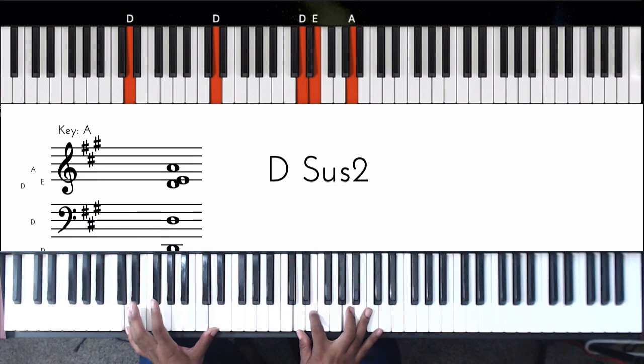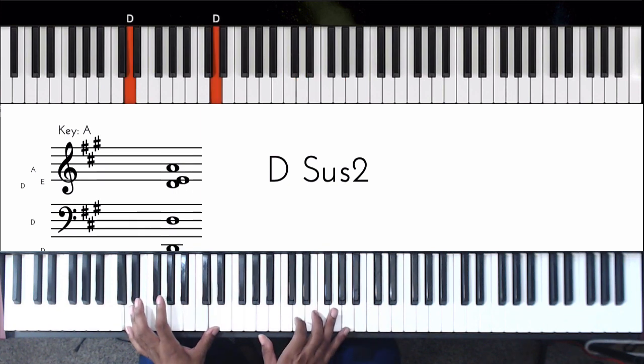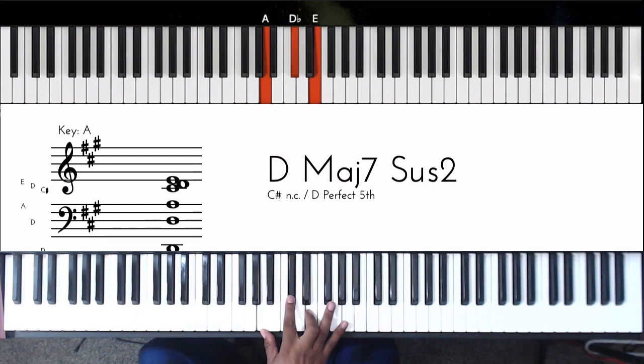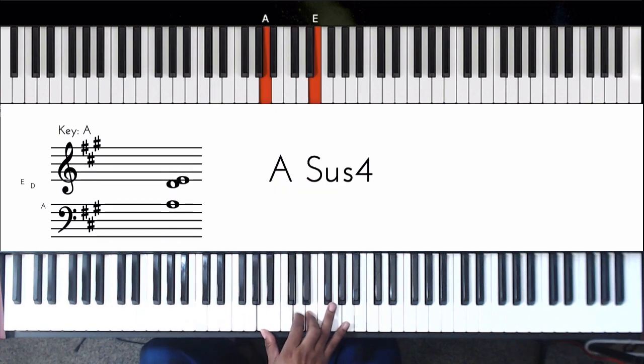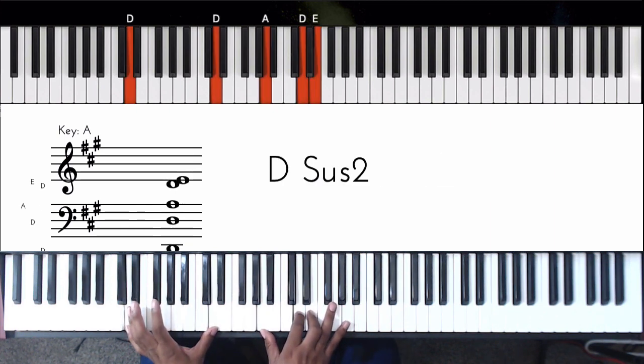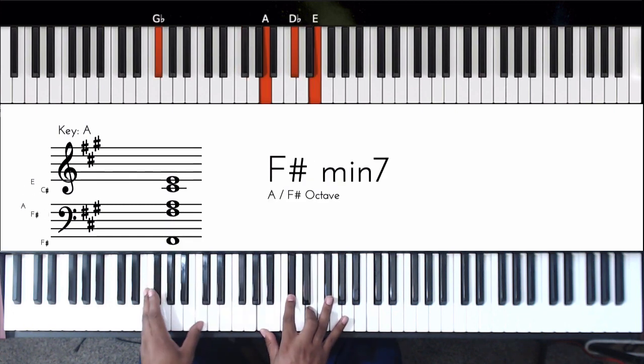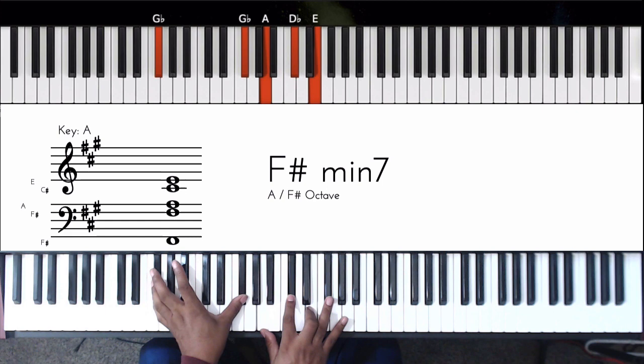Pretty much the way we're playing it is in the left hand we've got D, in the right hand we've got A, D, and E, playing the sus2 in this inversion. I guess this could also be looked at as an A sus4, but for our context we're going to look at this as a D sus2. Then to an F sharp minor 7 - got F sharp in the left hand, right hand we've got A, C sharp, E - F sharp minor 7.